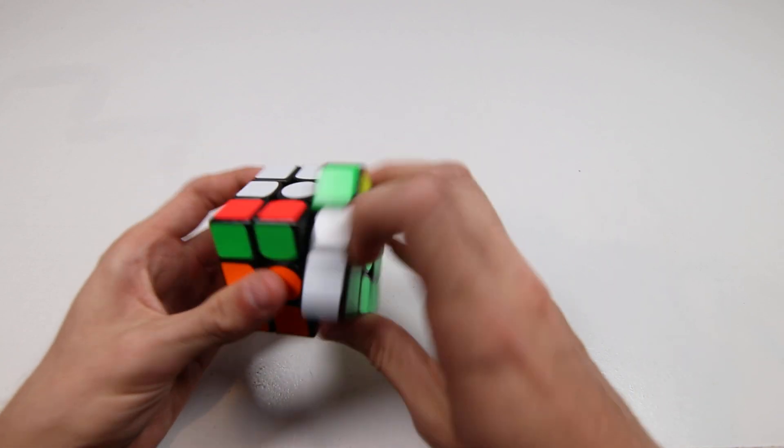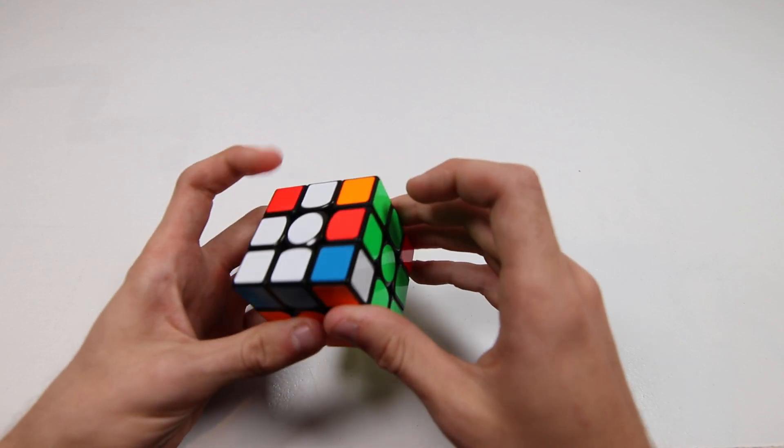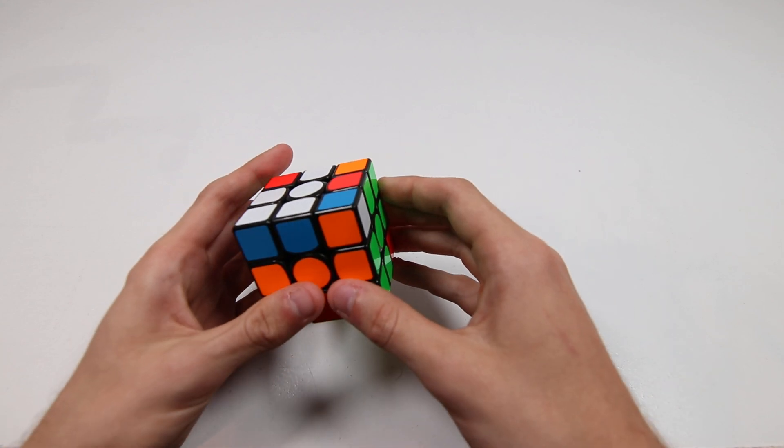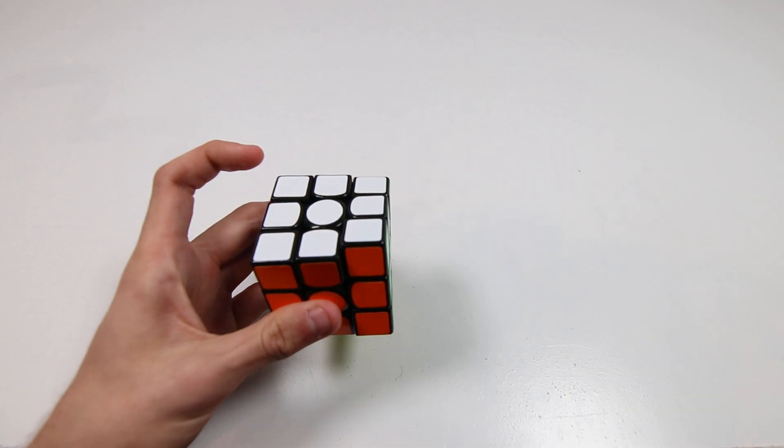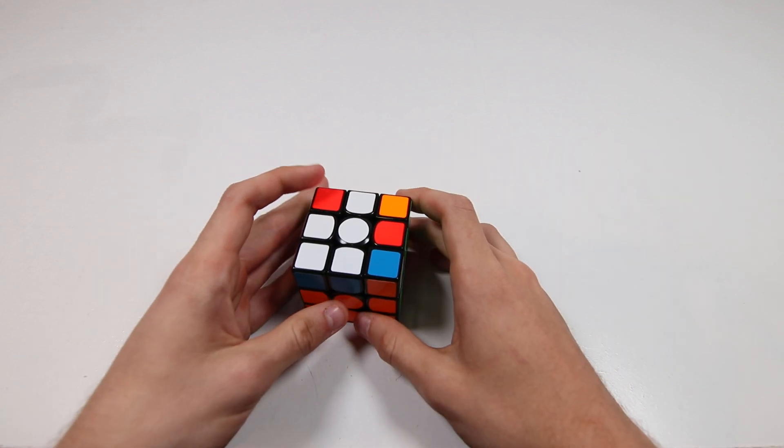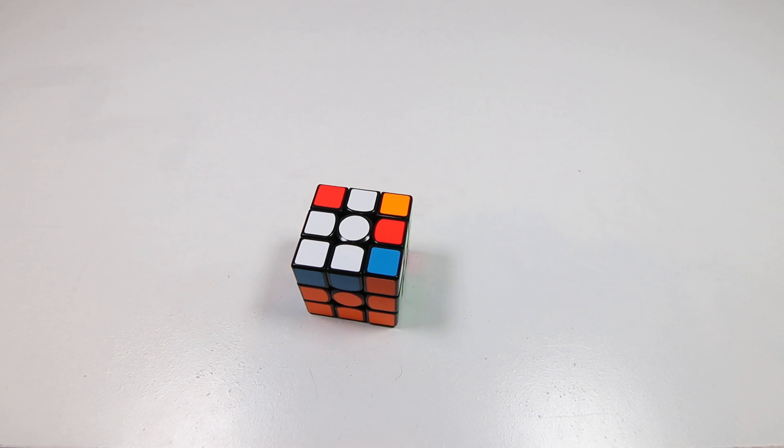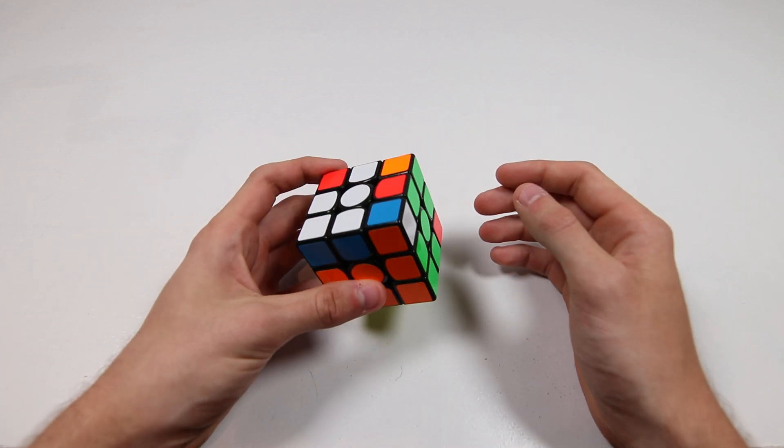I think there are definitely a decent number of algorithms where this is true. For example, this F2L pair, I don't see any point in trying to do fancy U moves there. I just think re-gripping like that makes a lot of sense. But there's been one thing I've been playing with in particular, and that's how I do that right hand re-grip.